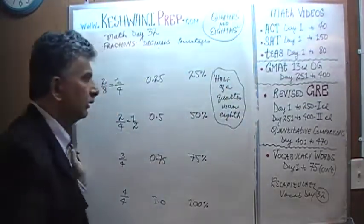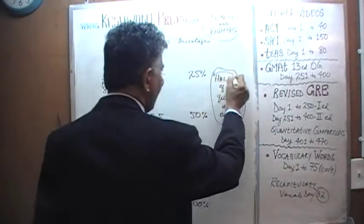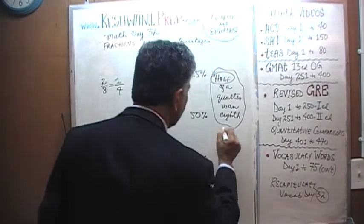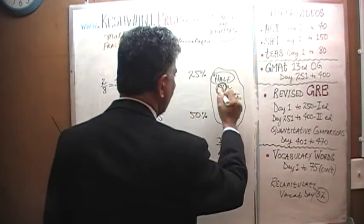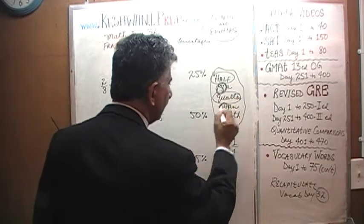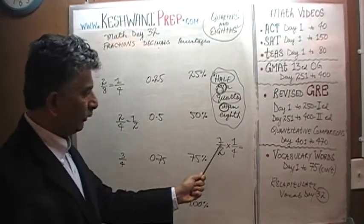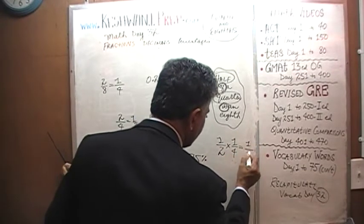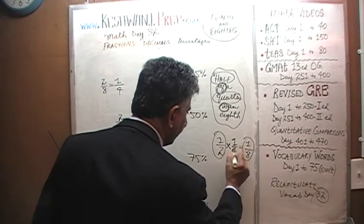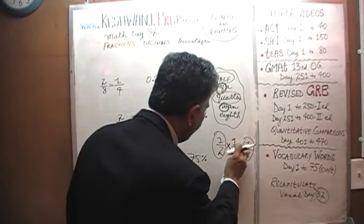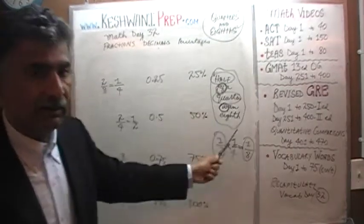Half of a quarter is an eighth. How do we write this as an equation? Half — and 'of' means times — half of a quarter. 'Is' means equals: one half times one quarter equals one eighth. One times one is one, and two times four is eight. That is the only fact we need to know.